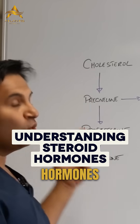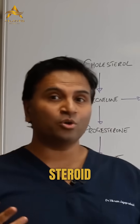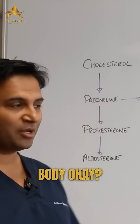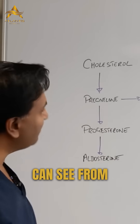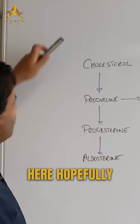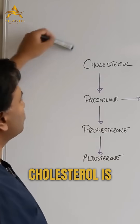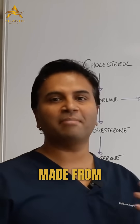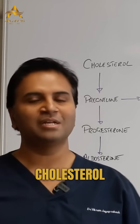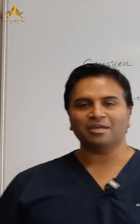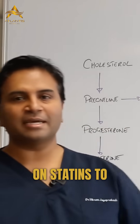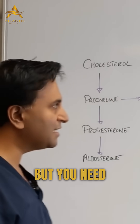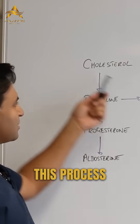This is how steroid hormones are created in the body. As you can see from here, cholesterol is the starting point. All steroid hormones are made from cholesterol. And cholesterol gets a bad rep — everyone's on statins to try and lower cholesterol — but you need cholesterol to start this process.